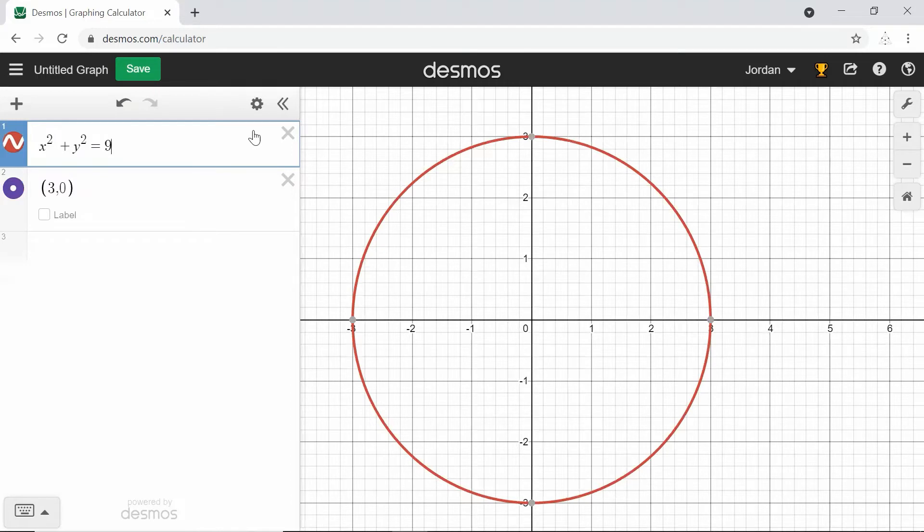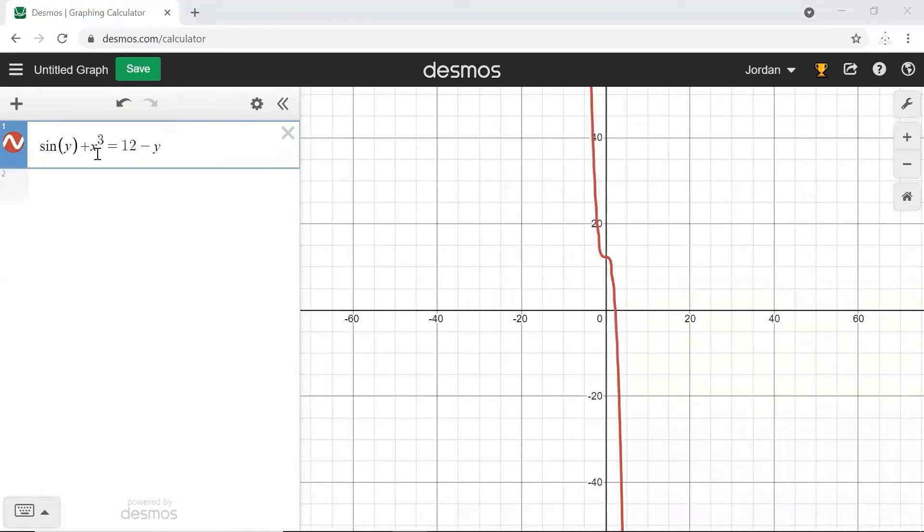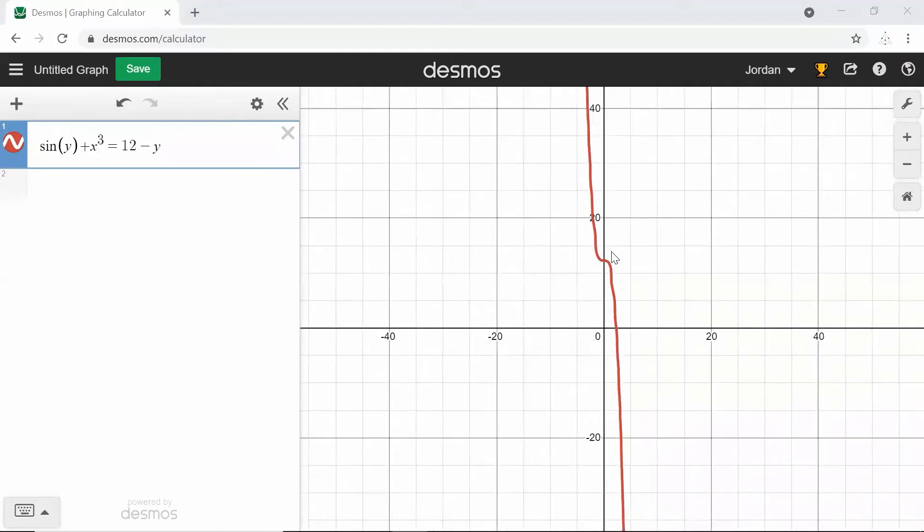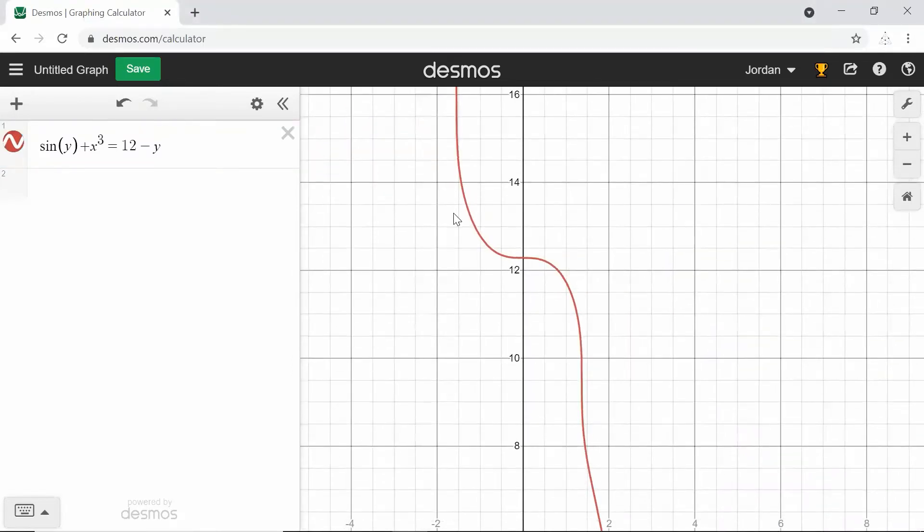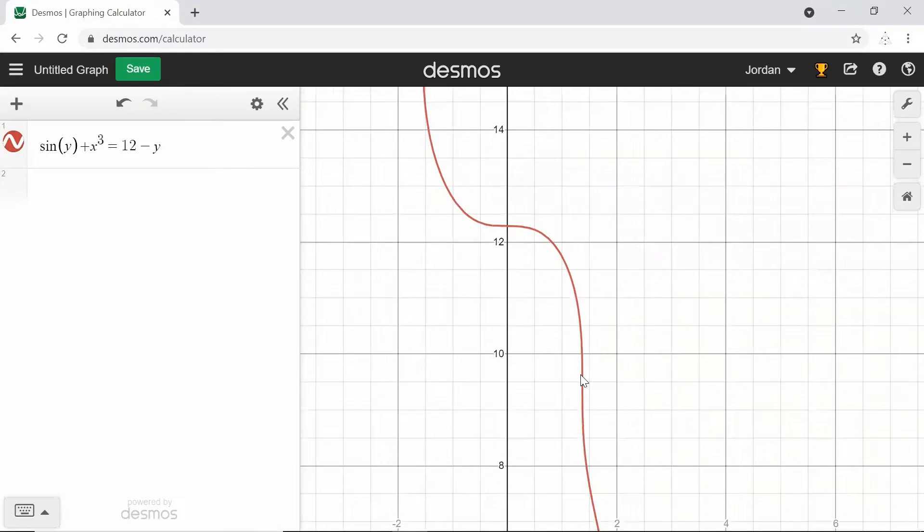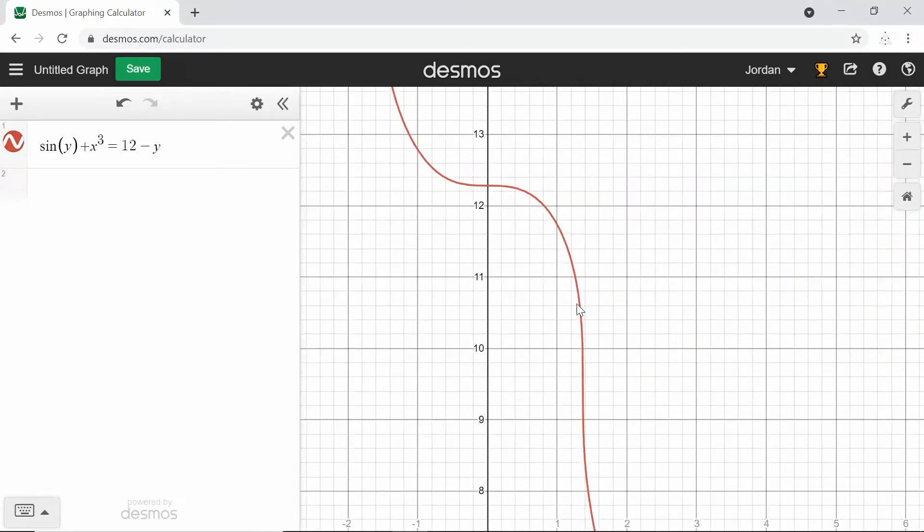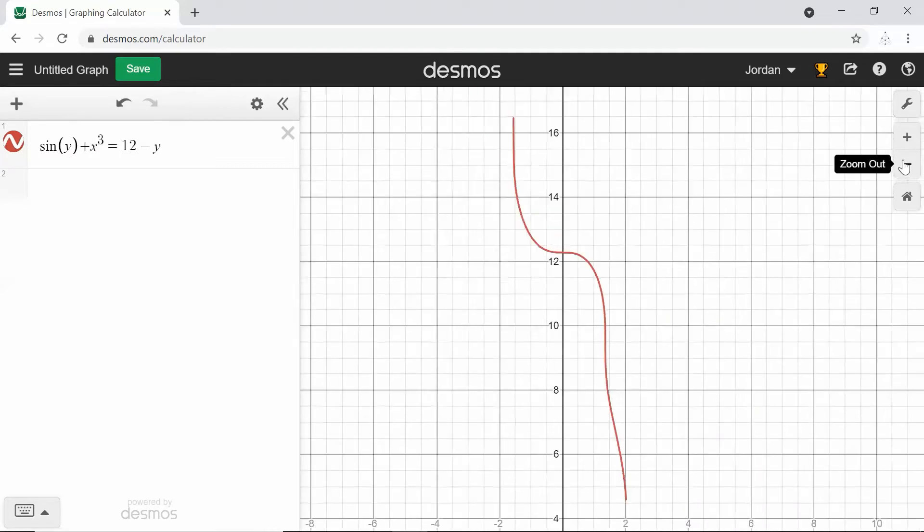Let's graph the other expression as well. So I've graphed sine of y plus x to the third equals 12 minus y. And we get this really kind of awkward looking graph. It's got some waves in it. And it kind of looks like an x to the third with some really wavy spots in it. This is not a function because if you actually zoom in, you see that you can cross this at multiple places in multiple spots here. So it fails the vertical line test.